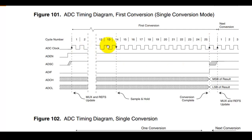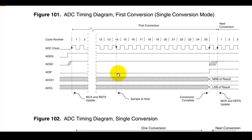To start the ADC, first enable the ADC using the ADEN bit, then set the ADSC bit to start the conversion. When the conversion is complete, the ADIF flag will go high — you can monitor the ADIF to see whether the conversion is complete or not. After conversion is complete, the result will be placed in the ADCL and ADCH registers.